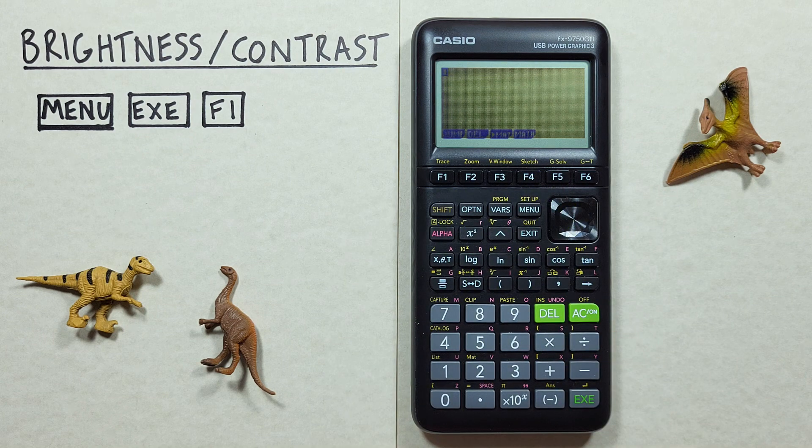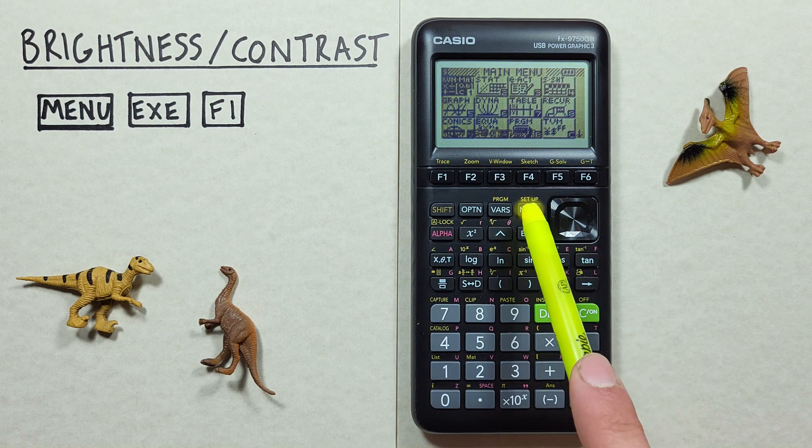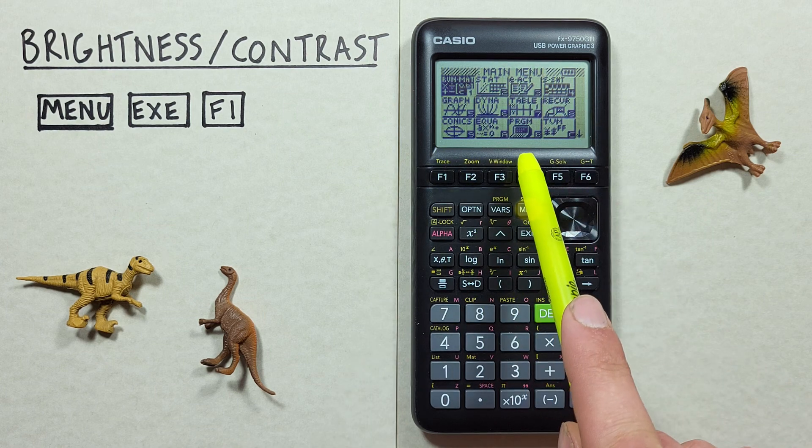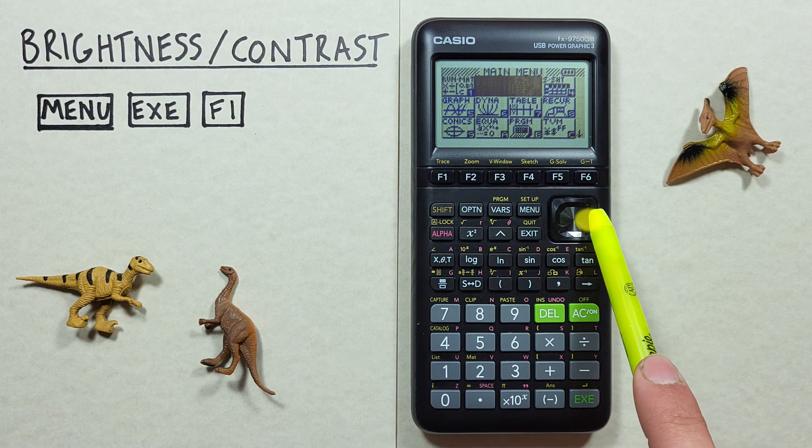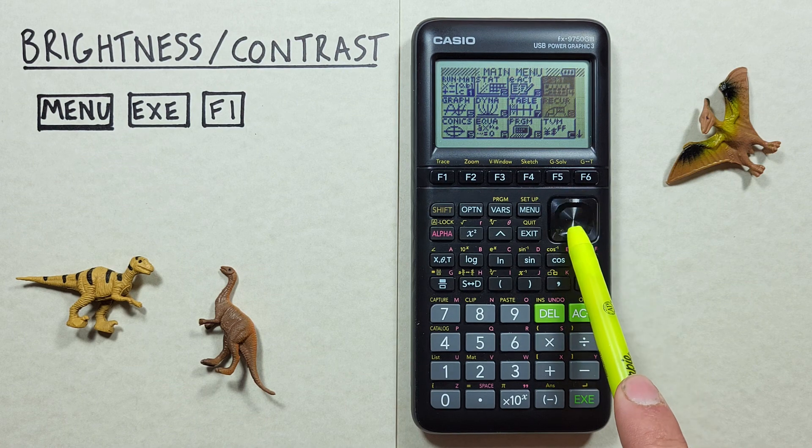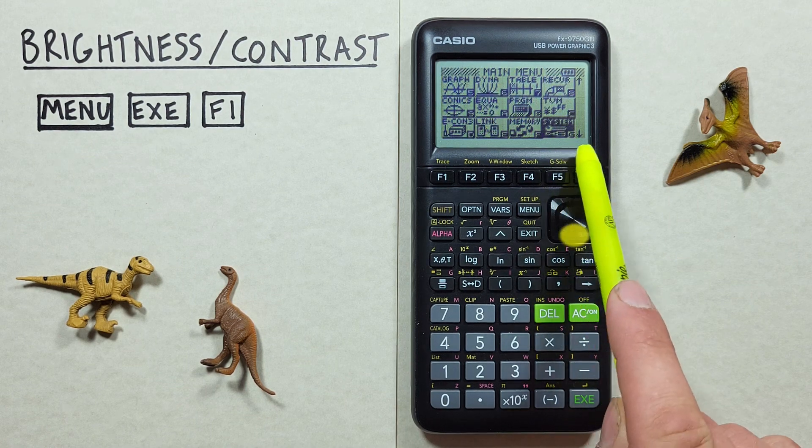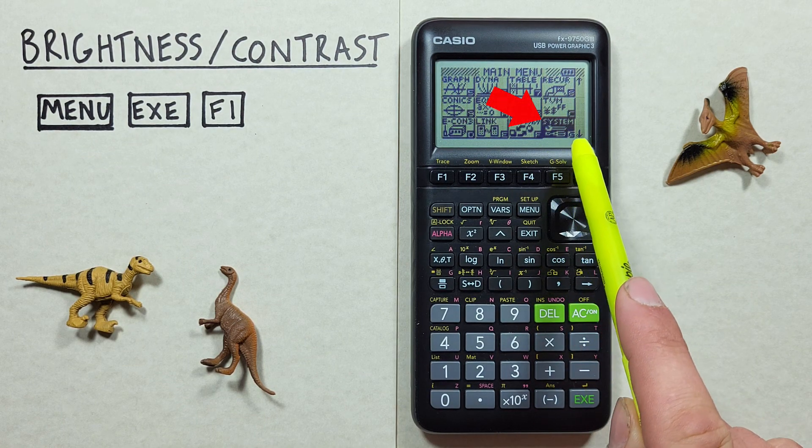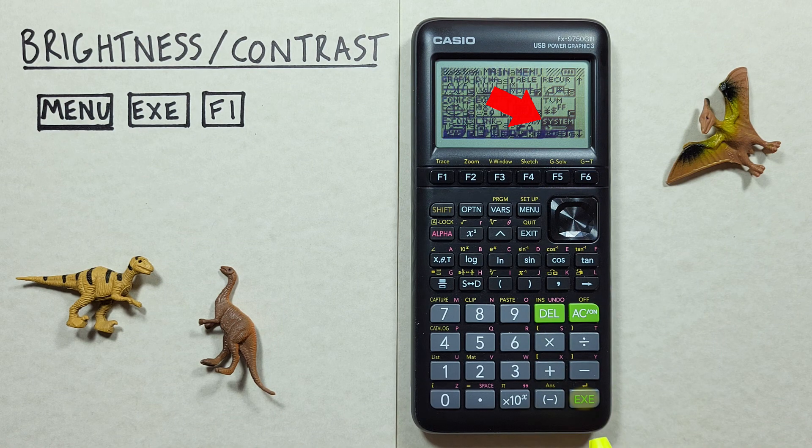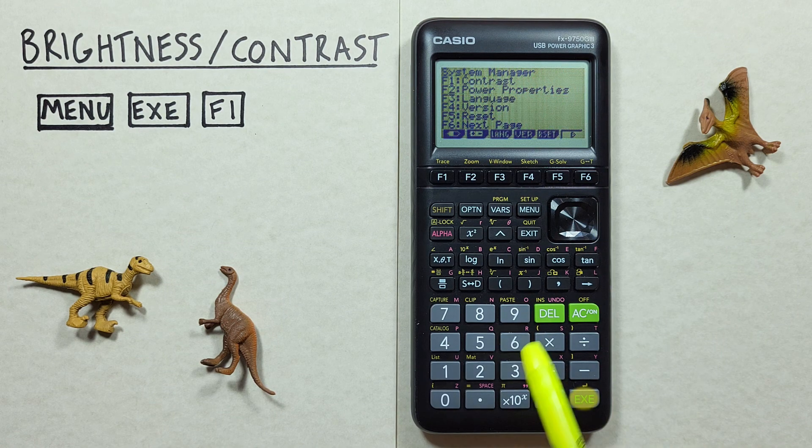First what we have to do is press the menu key so that we're on the main menu. Then we need to scroll to the right and all the way down until we see system. We select that and that brings us to this menu here.